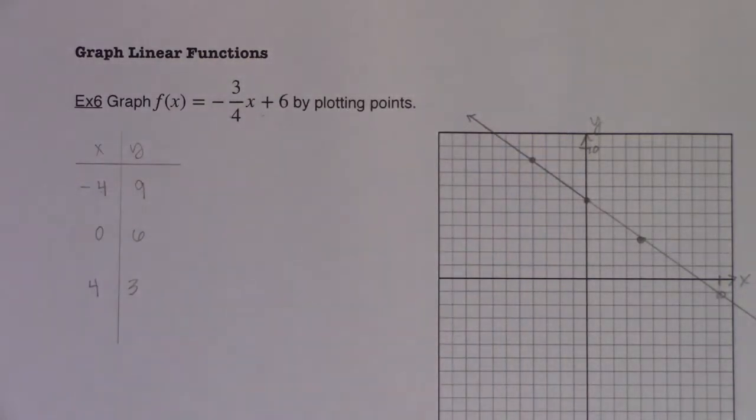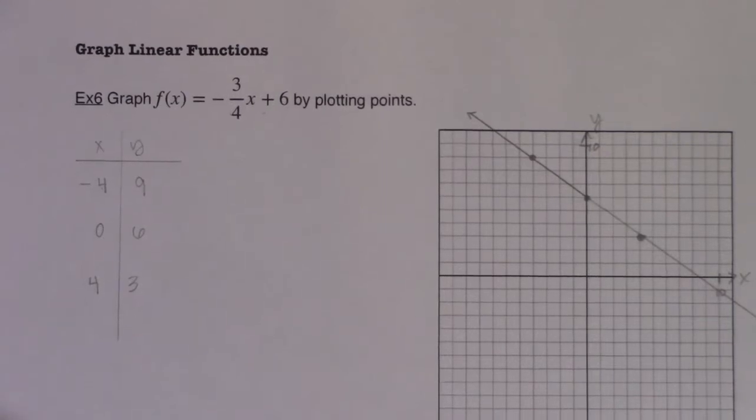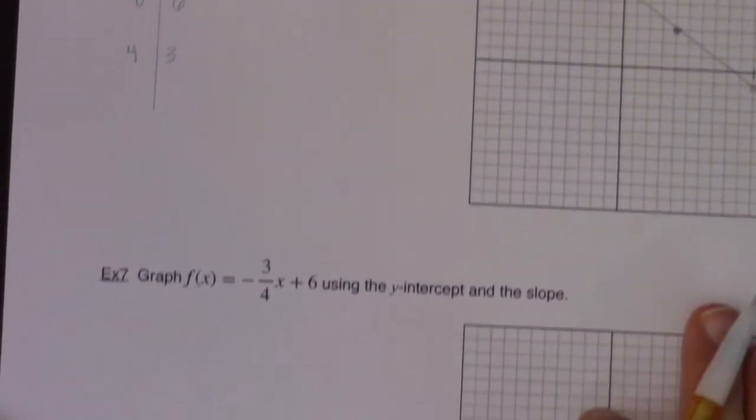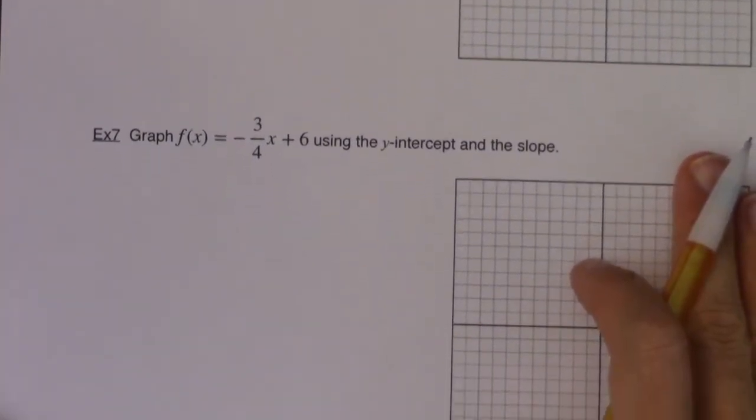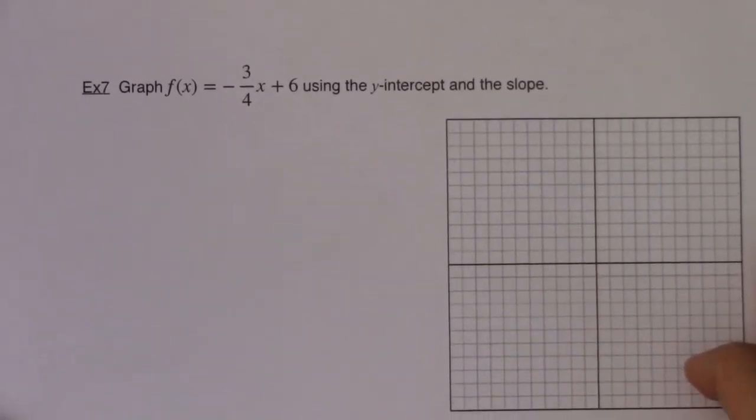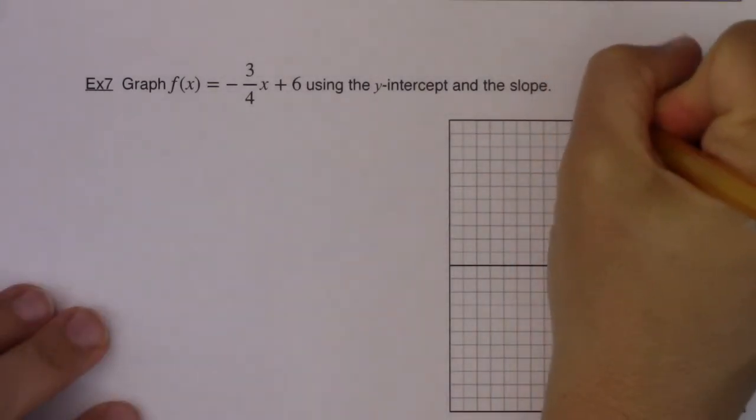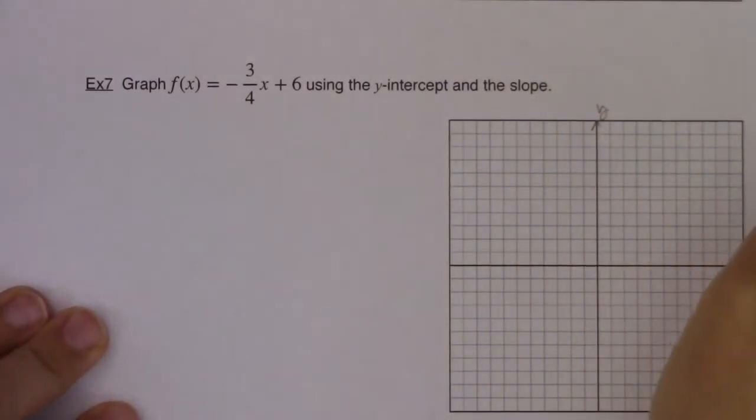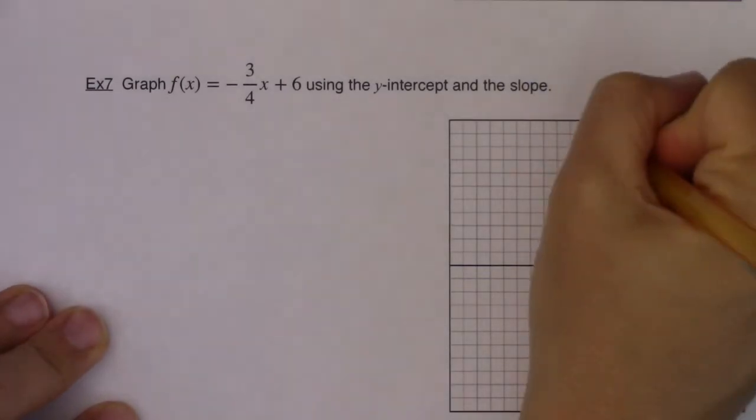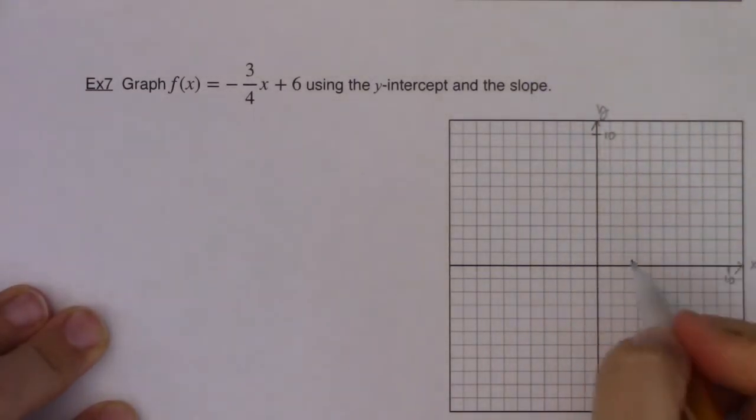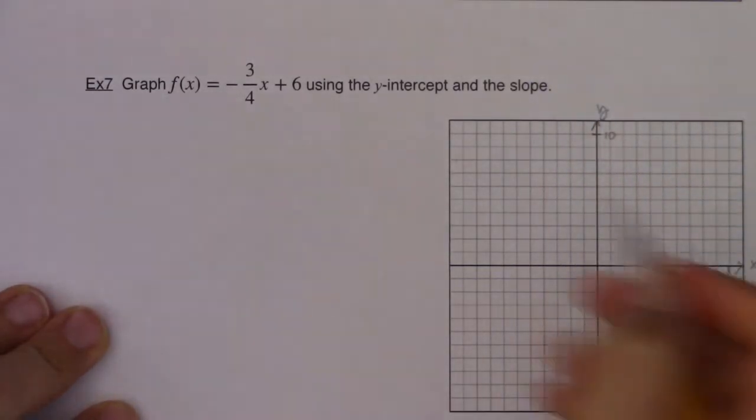Let me scooch this up and let's just try a different way of graphing the exact same line. And like always, whenever you graph something for me, make sure you label your axes. I want to see x's and y's, or whatever letters you're using, and then scale them by telling me what each square represents. I'll let each square represent one unit.